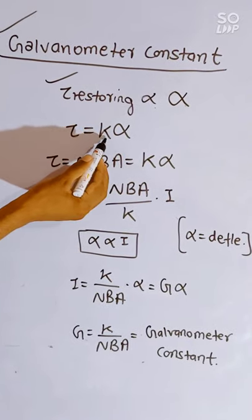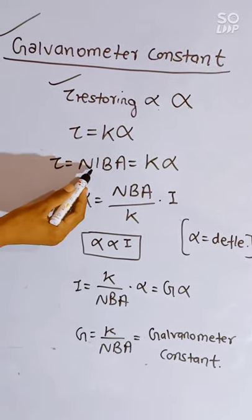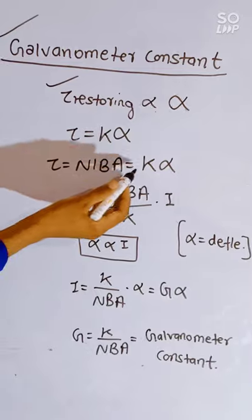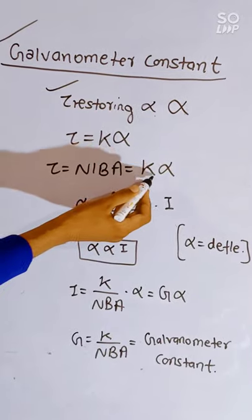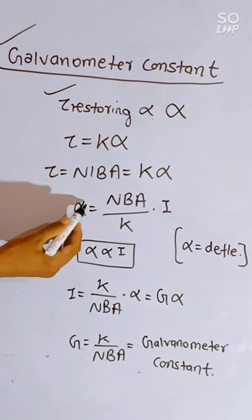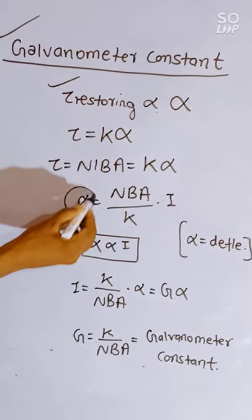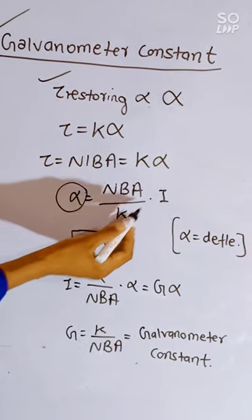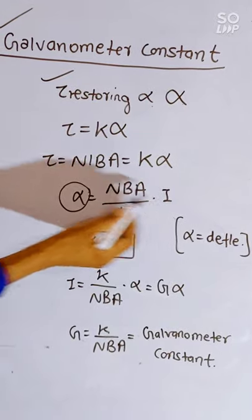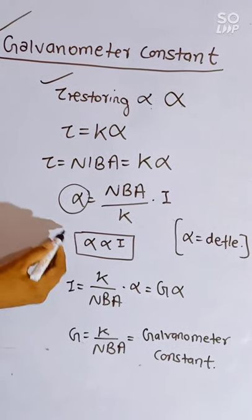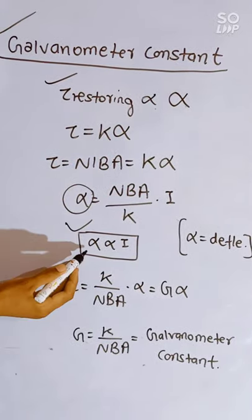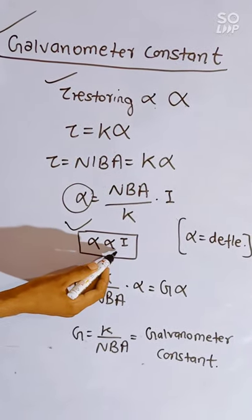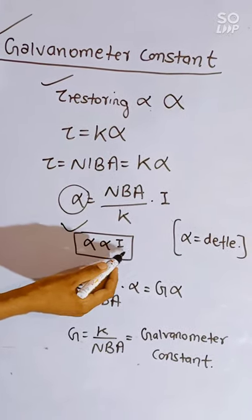K is the constant term. We know that torque equals NIBA, which equals K alpha. From this, we will write here: deflection equals NBA upon K, multiplied by I. From this we will write that deflection is directly proportional to current.